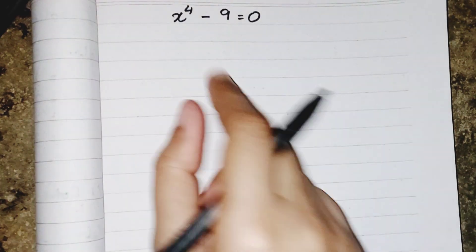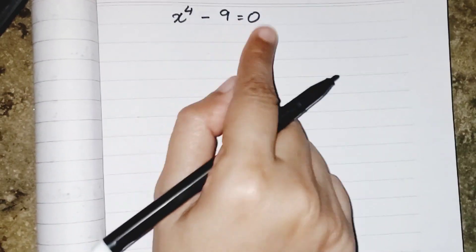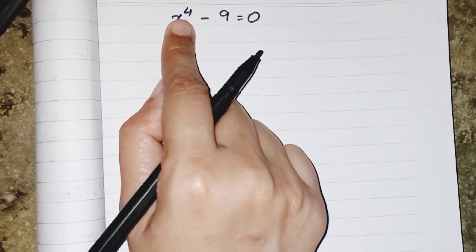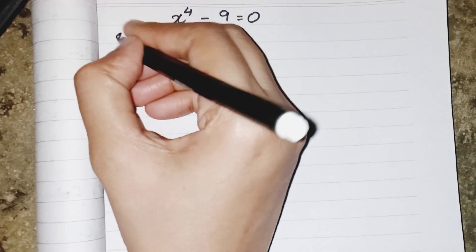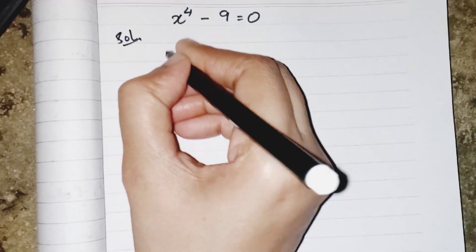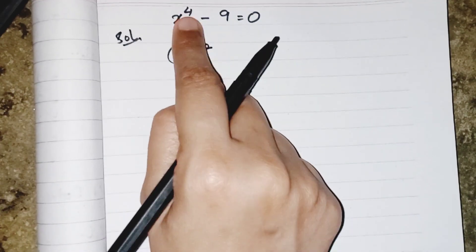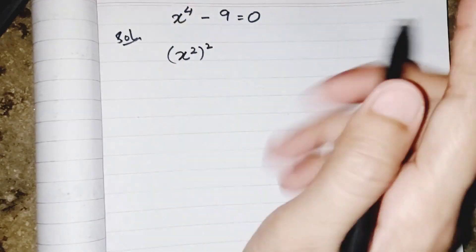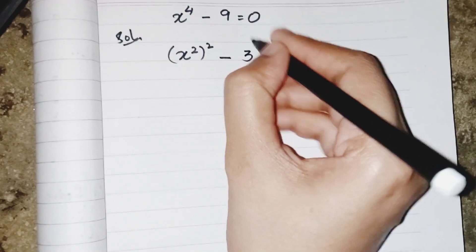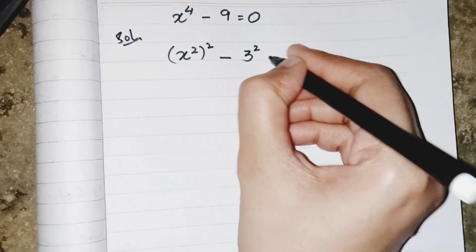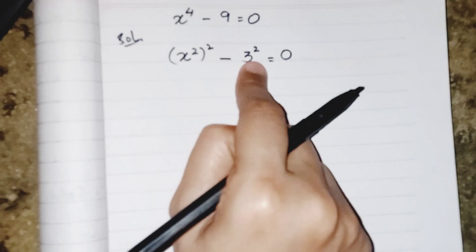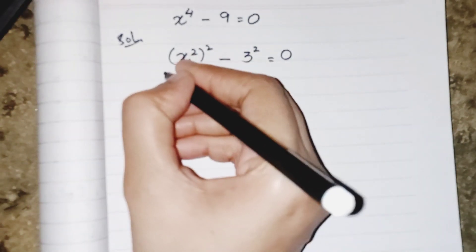Hello everyone, today's question is x⁴ minus 9 equals 0. When we have power 4, we have to break it into 2 into 2. Starting this question, I can write x² squared. I am breaking the power because by using power 4 we don't have any formula to solve it. Similarly, I can break 9 into exponential form, so I have (x²)² minus 3².